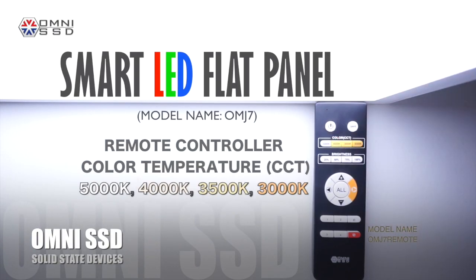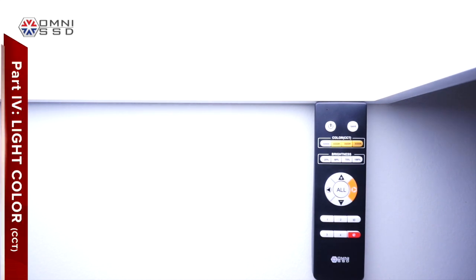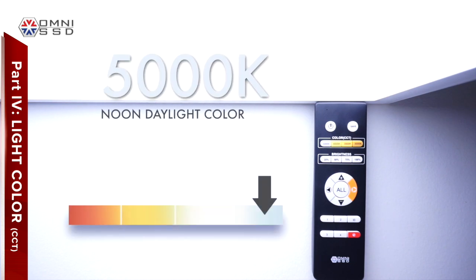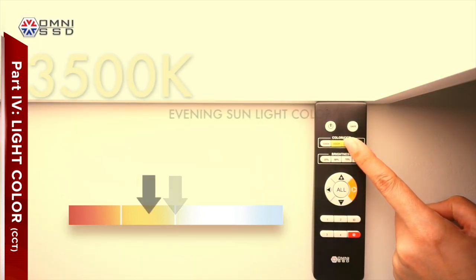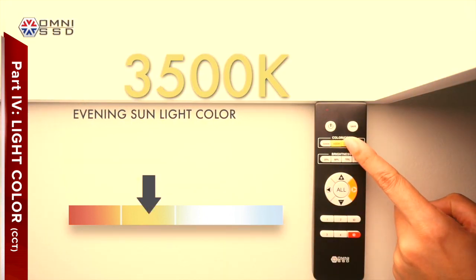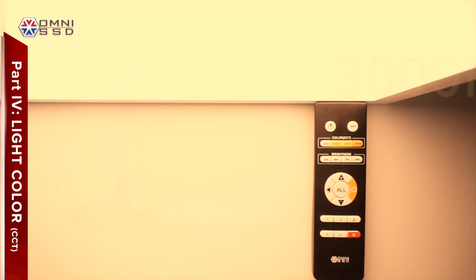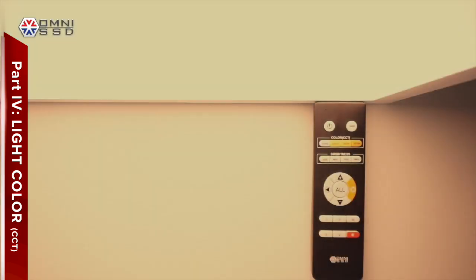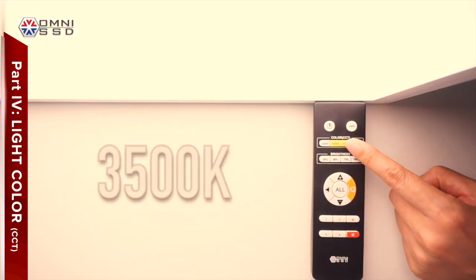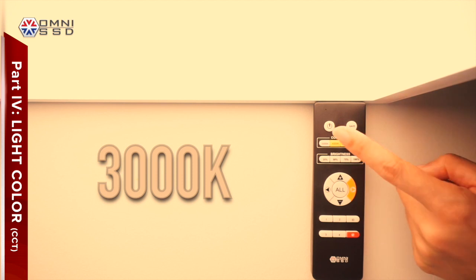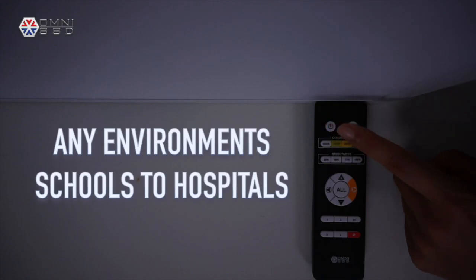Using the Smart LED Flat Panel Remote Control, we can change the color temperature from 3,000 Kelvin all the way through 5,000 Kelvin. 5,000 Kelvin is noon daylight color. 4,000 Kelvin is warm white LED color. 3,500 Kelvin is evening sunlight color. 3,000 Kelvin is halogen bulb light color. Changing the color of the flat panel is as easy as pressing a button, from 3,000K through 5,000K, in any environment from schools to hospitals.